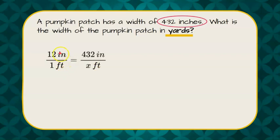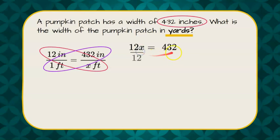We know that 12 inches equals one foot. We have 432 inches and want to know how many feet that is. We'll do cross product property: 12 times x equals 1 times 432. To solve we're going to divide both sides by 12. So 432 divided by 12.